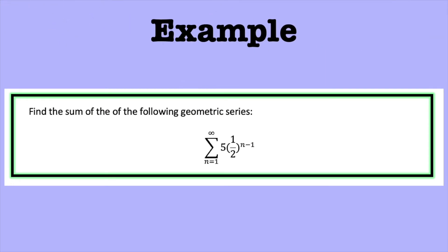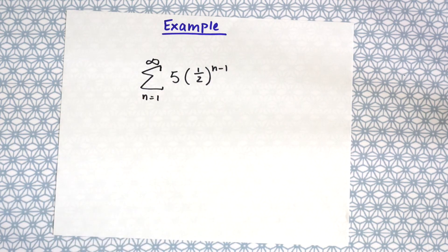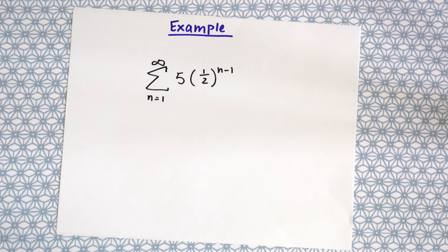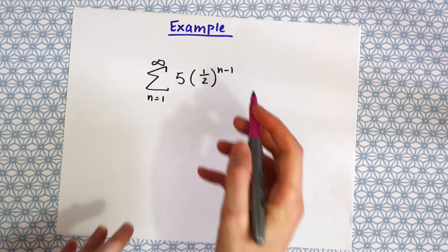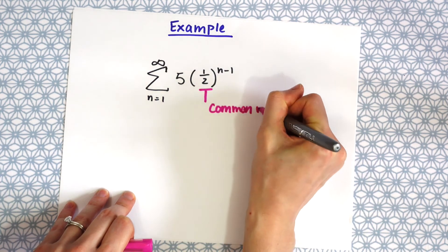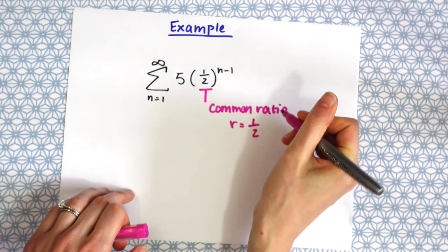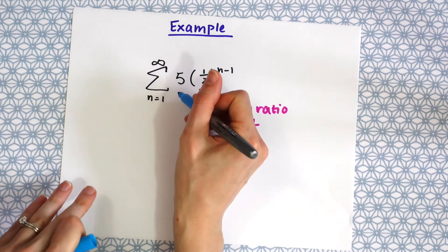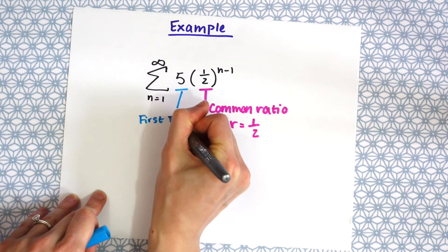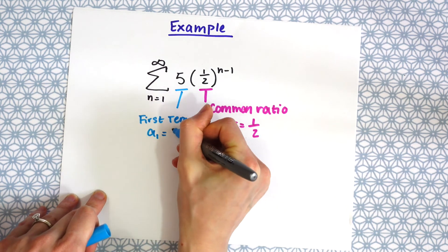We want to find the sum of n equals 1 all the way to infinity of the geometric infinite series of 5 times 1 half to the n minus 1. So the first we're going to want to do is label the parts of this formula. So we have our common ratio here. And we see that it's equal to 1 half. And we also have our first term, a sub 1, which is equal to 5.